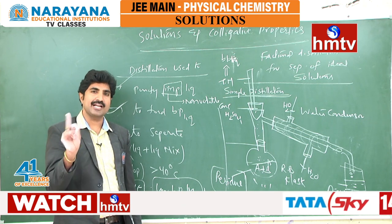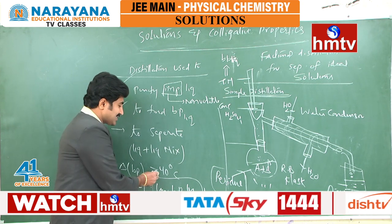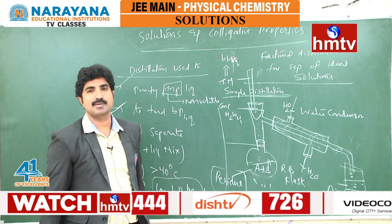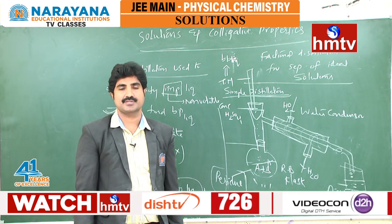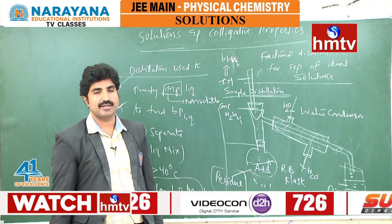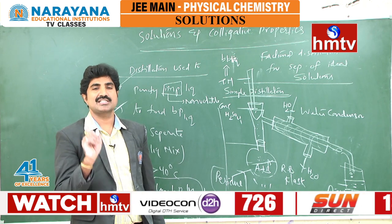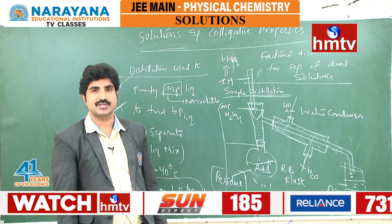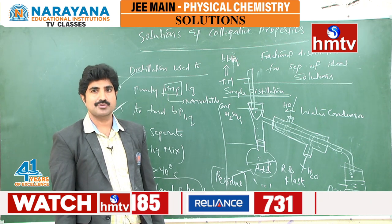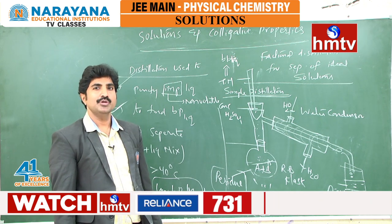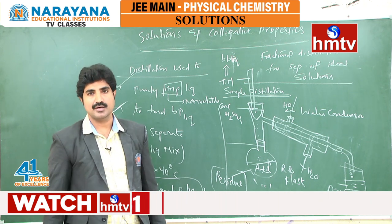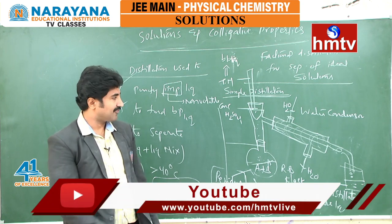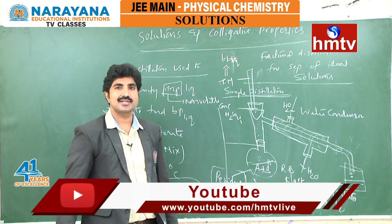Suppose if the boiling point difference is less than 40 degrees — meaning they have closer boiling points — then how to separate those liquids? Such liquids are separated by using fractional distillation. That fractional distillation will be used to separate our ideal and non-ideal solutions. I will discuss fractional distillation in the next session.